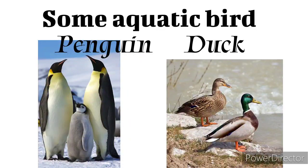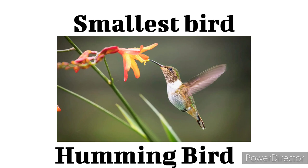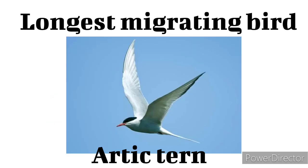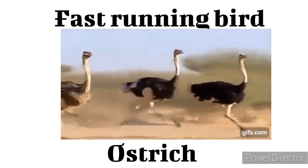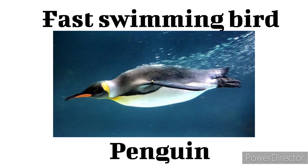Aquatic birds include Penguin, Duck, Swan, and Pelican. The smallest bird is the Hummingbird. The biggest bird is the Ostrich. The longest migrating bird is the Arctic Tern. The fastest running bird is the Ostrich. The fastest swimming bird is the Penguin.